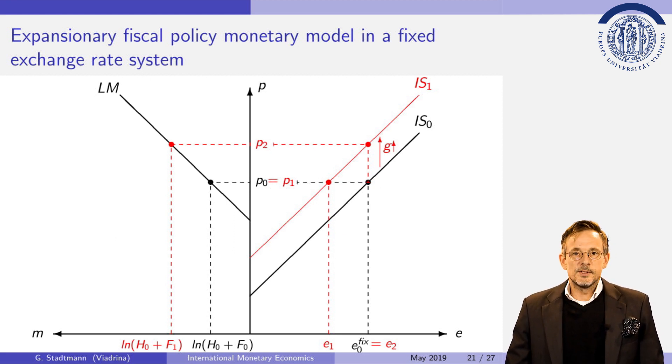Hence an increase in government spending has the following effects. Of course the exchange rate level is fixed in a fixed exchange rate system. An increase in government spending leads to an increase of goods prices and the central bank has to intervene in the foreign exchange market. The foreign component of money supply increases.